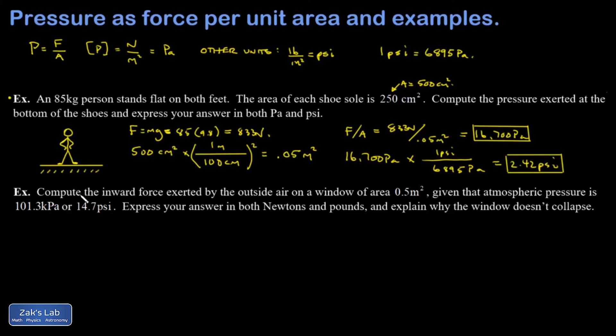In the second example, I'm asked to compute the inward force exerted by the outside air on a window with a given area, given that the atmospheric pressure is 101.3 kilopascals or 14.7 psi. So this is an example of a fluid exerting a pressure, but we're solving for F here. We're trying to find the force exerted by that pressure over a given area. So I'm turning around the pressure equation and I get force equals pressure times area. This is another thing that needs to be really casual when you're dealing with fluid statics and fluid dynamics. You do it all the time. So pressure times area is equal to force.